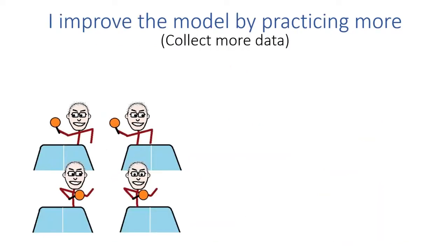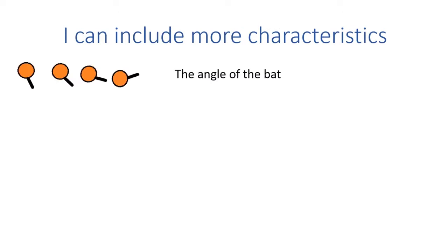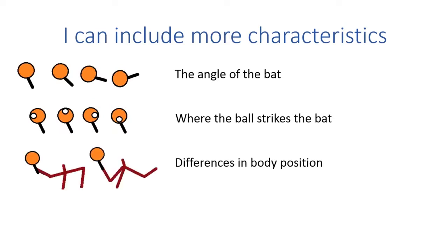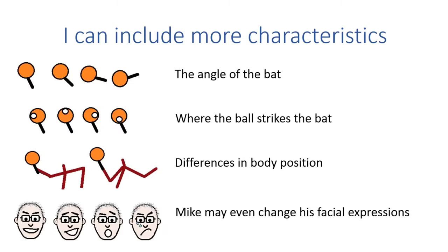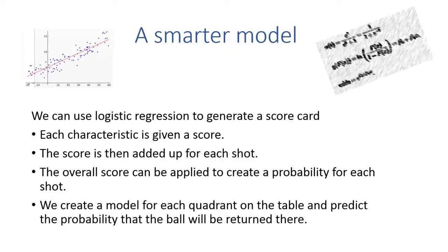Mike's been bragging, and what I don't want to do is just narrowly beat Mike — I want to leave nothing to chance. I want to make sure I really thump him at the game. So I'm going to improve that model by practising more. By practising more, all I'm doing is collecting more data. The more I practise, the more my brain records those characteristics and outcomes in Mike's play. This allows me to build a more accurate and sophisticated model. I can start to include more characteristics — the angle of the bat, where the ball strikes the bat, subtle differences in Mike's body position. And also, as I start to beat Mike, Mike's going to become quite emotional, so I can also take into account changes in Mike's facial expressions.